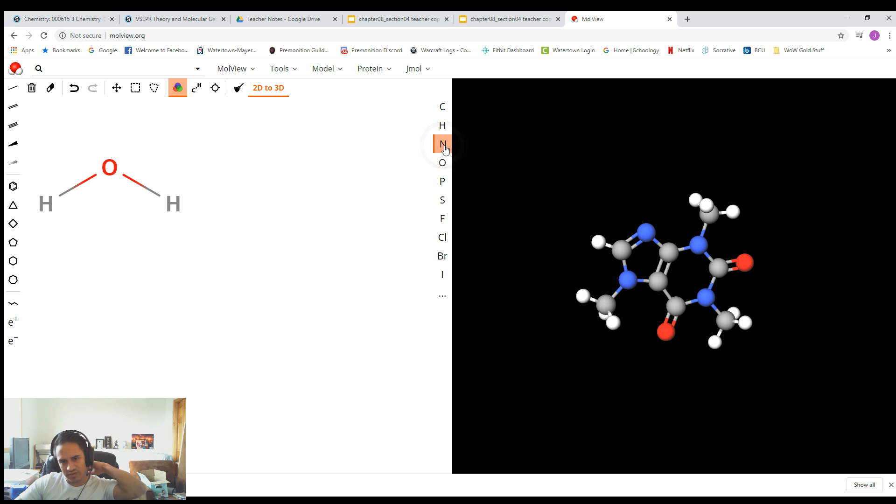Now let's build another one. We're going to build NO2. So let's go N and then we'll grab an oxygen and we'll drag it out to one side and then we'll drag it out to another. Now as you get further into the chapter, you'll learn more about drawing molecules. But this molecule in particular is going to have a double bond.